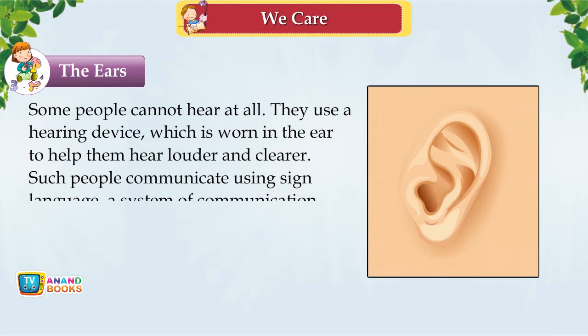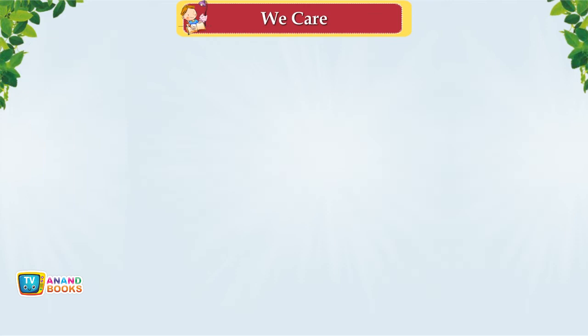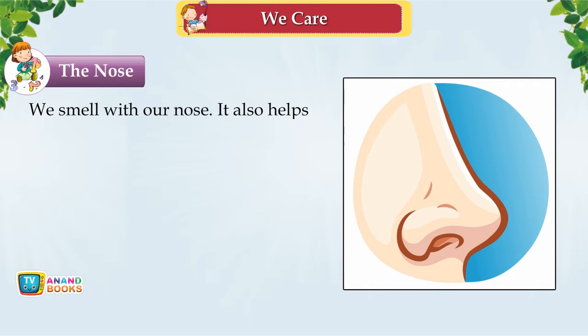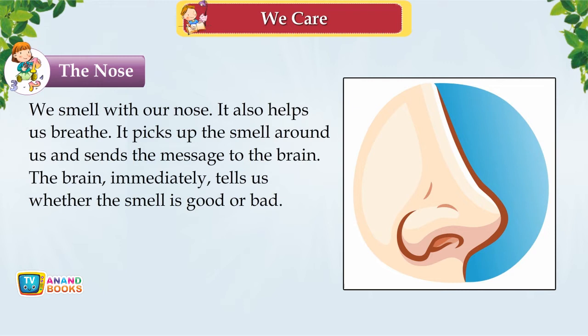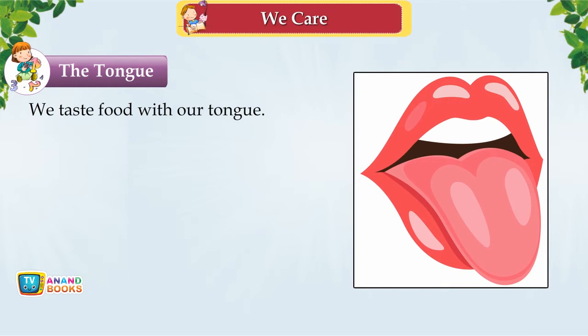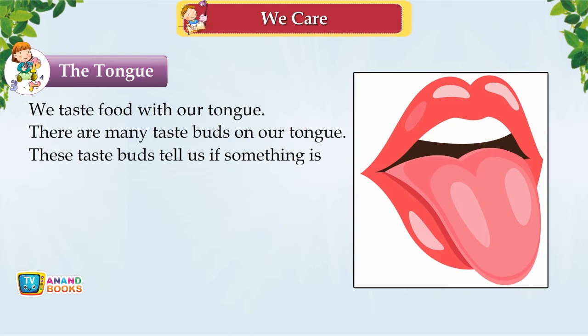The Nose. We smell with our nose, and it also helps us breathe. It picks up smells around us and sends the message to the brain. The brain tells us whether the smell is good or bad and we react accordingly. The Tongue. We taste food with our tongue. There are many taste buds on our tongue that tell us if something is sweet, sour, bitter or salty.